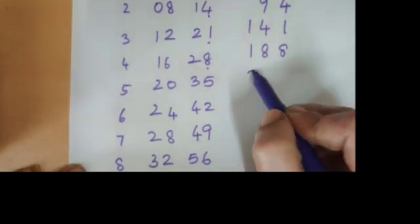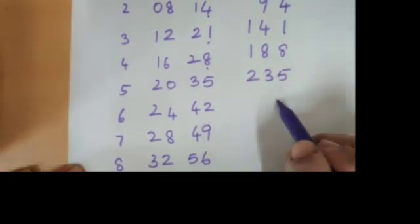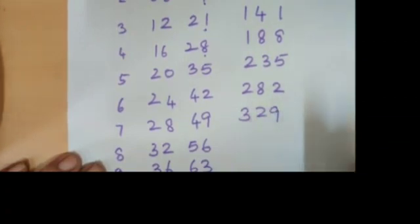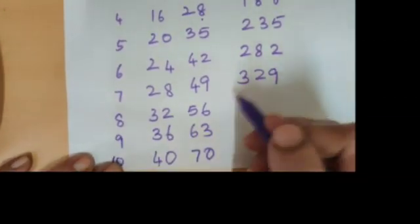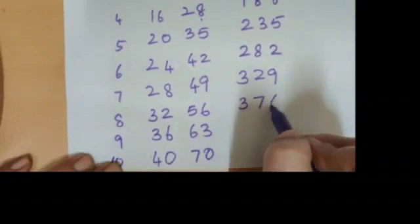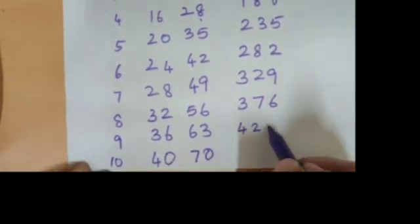And similarly you have the next one which is 235. You have the next one, remember what you are writing here in the last column is 2. 24 plus 4 is 28, 282. And then you have 329. And then you have 376. And then you have 423.